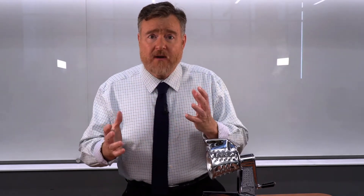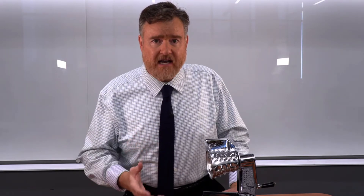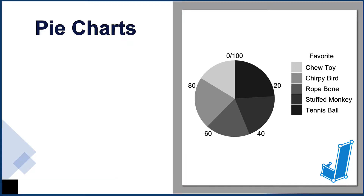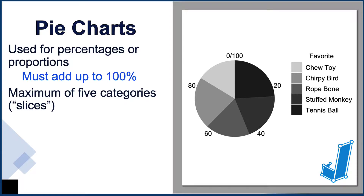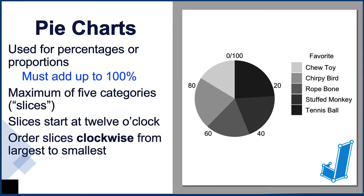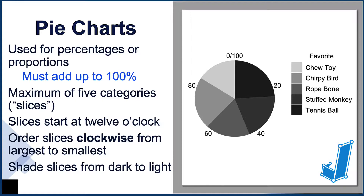But if you are going to use a pie chart and do it correctly, you must consider data selection. Data in a pie chart must add up to 100% — you must have data that can be represented in percentages or proportions. Pie charts work better with fewer categories, and you should limit yourself to a maximum of five categories or slices. The slices should start at 12 o'clock, ordered clockwise beginning with the largest and moving in descending order to the smallest. Color or shade those slices starting with the largest slice being the darkest, moving clockwise to the smallest slice being the lightest.